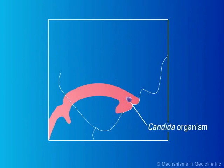Candida organisms readily adhere to the mucosa of the mouth and may proliferate there, causing oropharyngeal candidiasis, or they may extend into the esophagus, causing esophageal candidiasis. Not only will they proliferate on the mucosal surface, but they may, on occasion, invade into the deeper tissues in these areas, producing invasive disease.